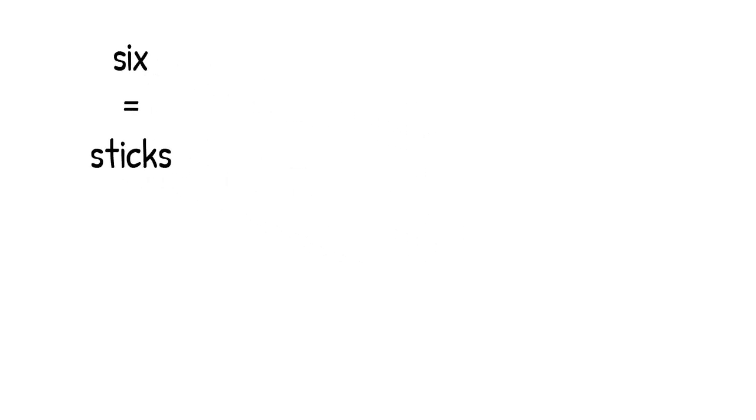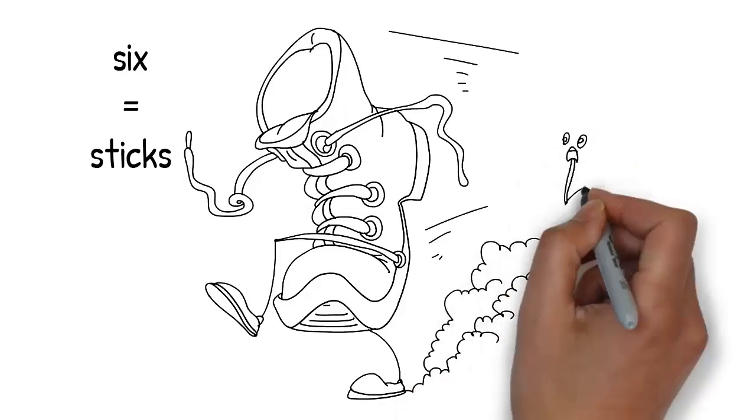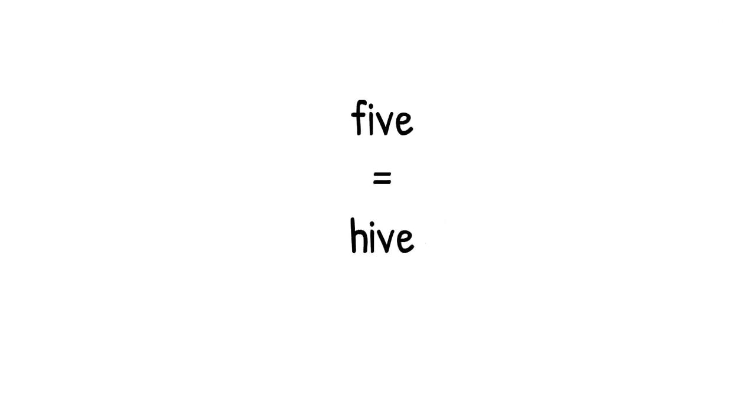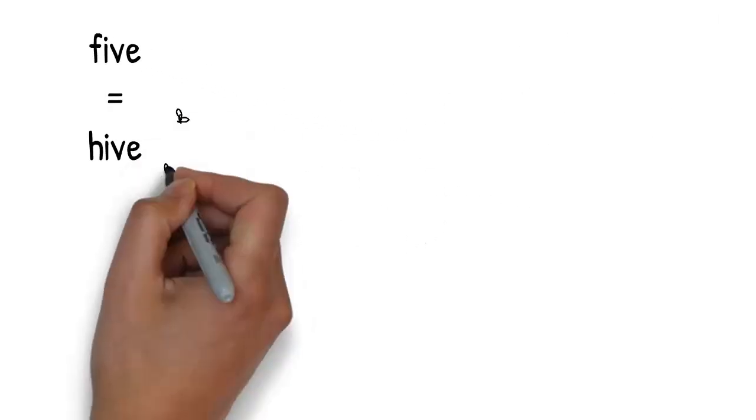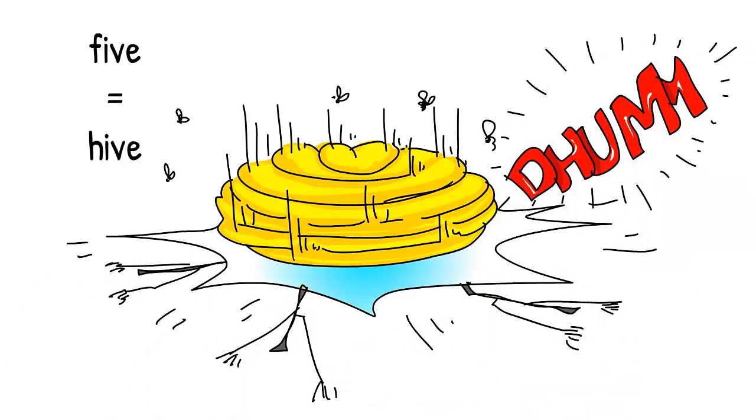The shoe lands on the ground, but some sticks start to chase after it. What number does sticks rhyme with? Six. As the sticks are running along, a large beehive falls out of the sky and lands on them. Hive rhymes with five.